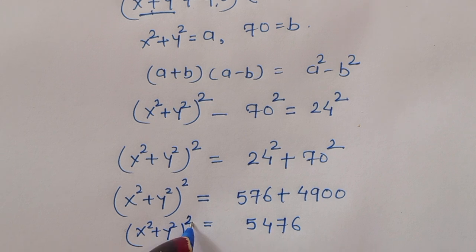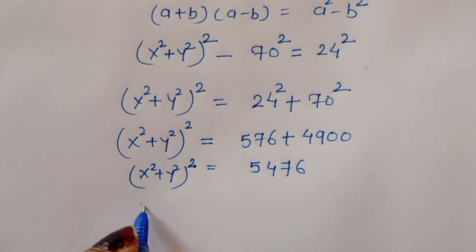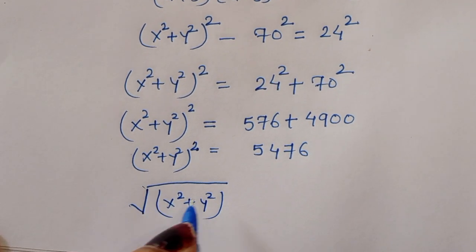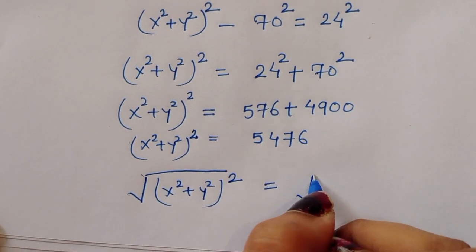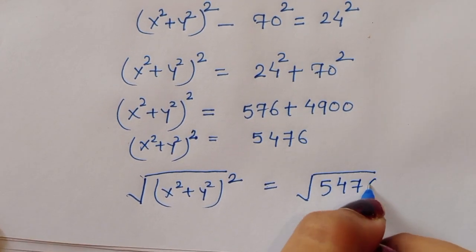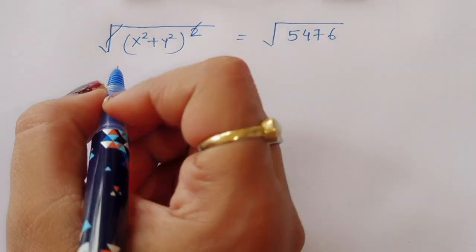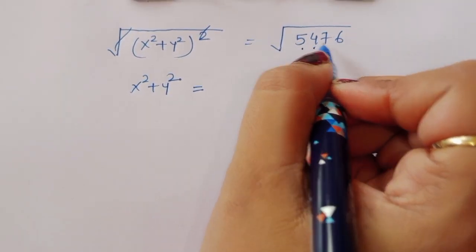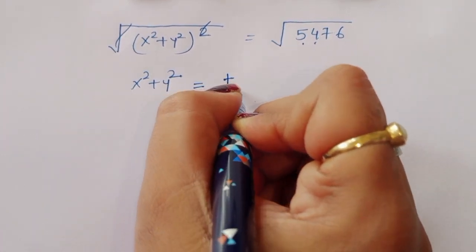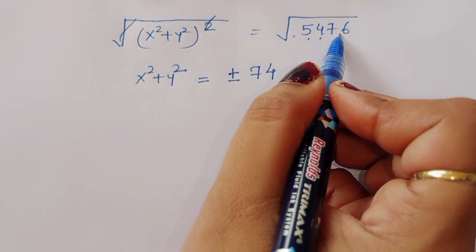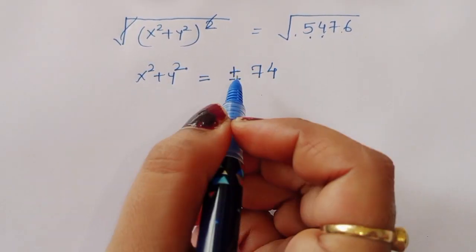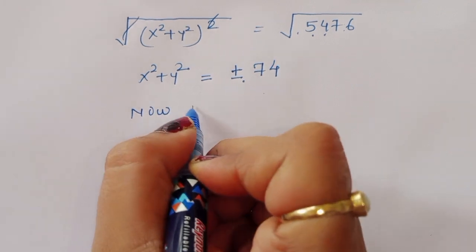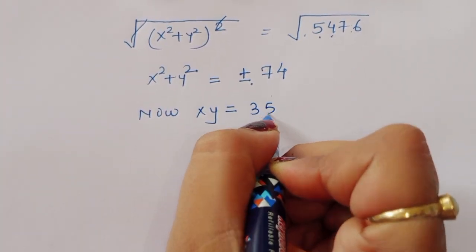Now taking square root of both sides: the square root of x squared plus y squared whole squared cancels the square, giving x squared plus y squared is equal to the square root of 5476, which is plus or minus 74. So x squared plus y squared equals plus or minus 74. We also know that xy equals 35, which was given.